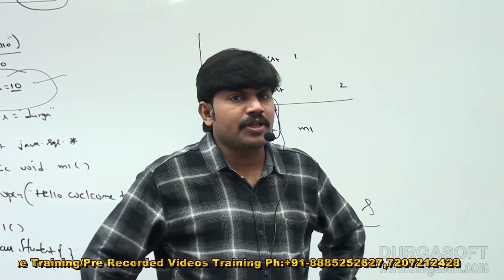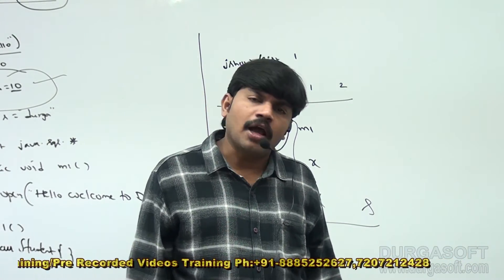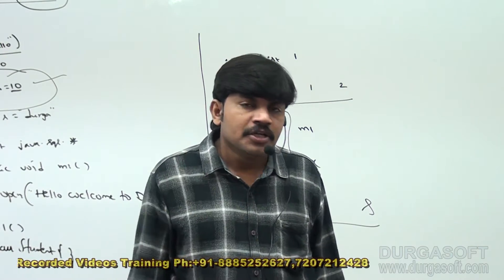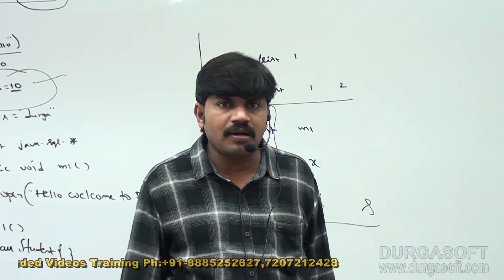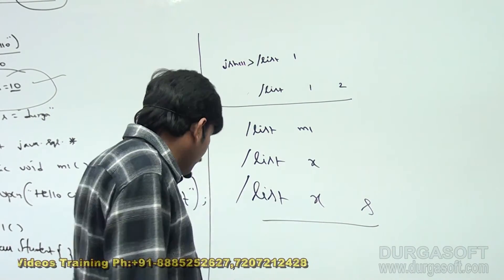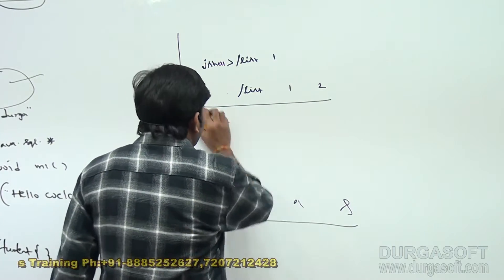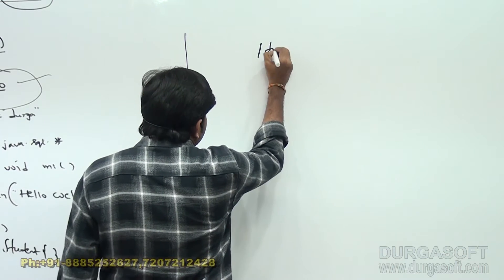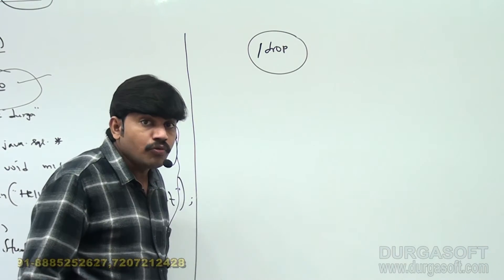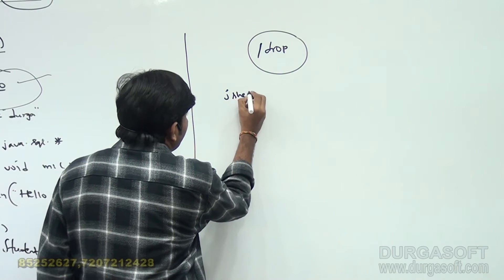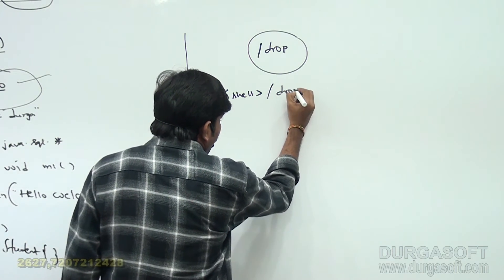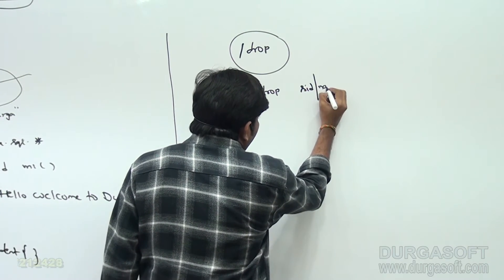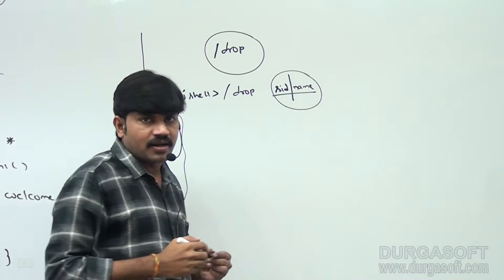Now you are in a position to understand how to list out snippets based on ID and based on name, and how to list all snippets using slash list or slash list with options. Can I drop a particular snippet? Yes, of course. Drop means delete. It is possible to drop a snippet. To drop a snippet, we require to use slash drop — that is the command.